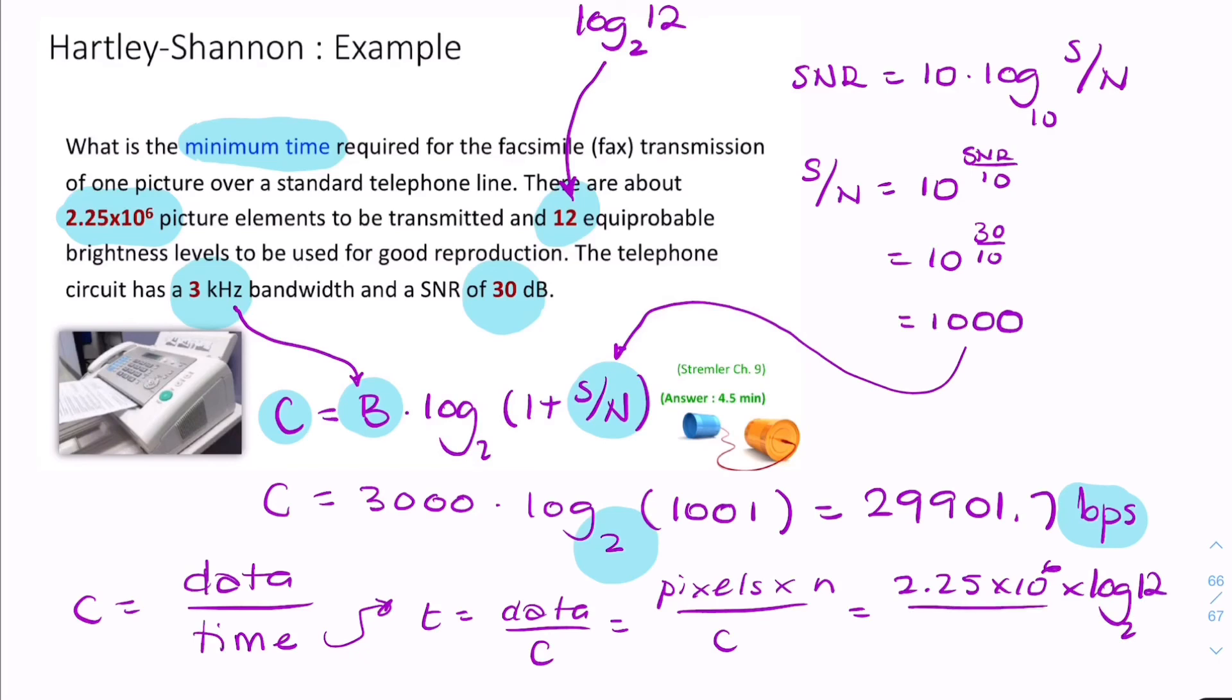And then we divide that by the 29,901.7. And that gives you a number in seconds. And if you divide by 60, it gives you approximately 4 and a half minutes. So, that's the final answer for that. I hope you found that easy to follow.